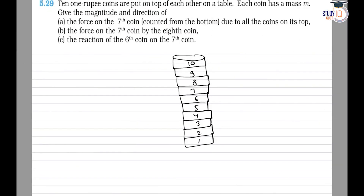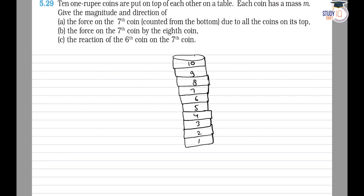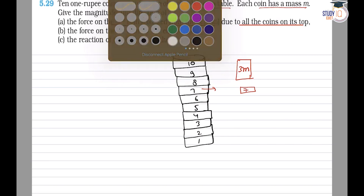NCERT Physics Class 11, Chapter 5 — Motion in a Plane, equation number 5.29. In this problem, 10 one-rupee coins are put on top of each other on a table, and each coin has a mass m. We have to find out the first part: the force on the seventh coin counted from the bottom due to all the coins on its top. The coins above the 7th coin are coin numbers 8, 9, and 10, and the mass of these three coins is 3m.